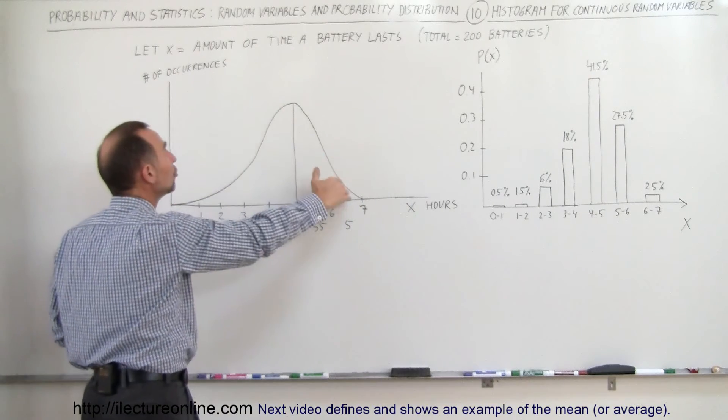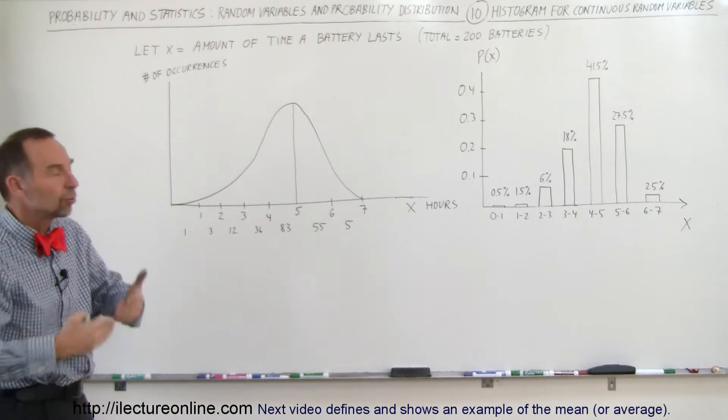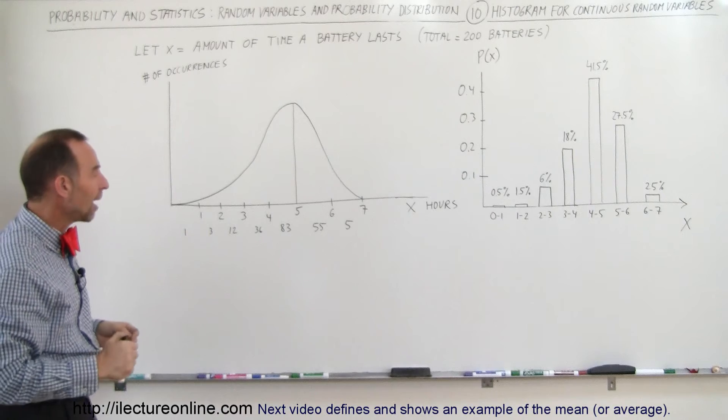Here, when you add up all of them, you should get 200 batteries, or a total of 200, because we did 200 experiments. We had 200 separate batteries for which we measured the time.